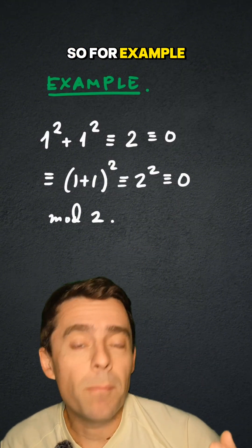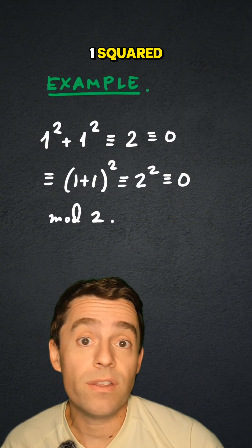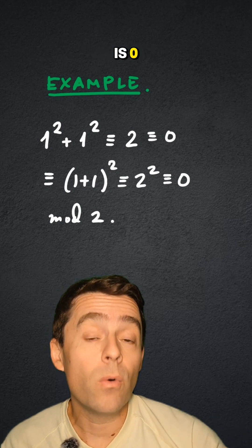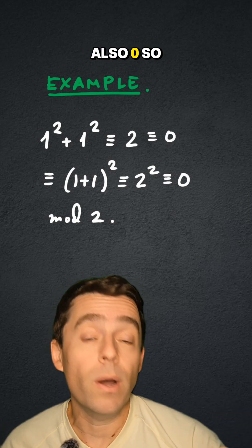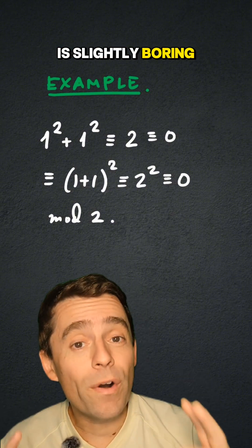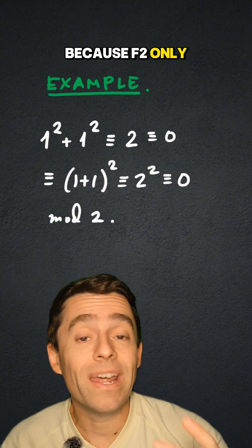So for example, 1 squared plus 1 squared, that is equal to 2, which is zero. And 1 plus 1 is zero squared, which is also zero. So it works. But this example is slightly boring also because F2 only has two elements.